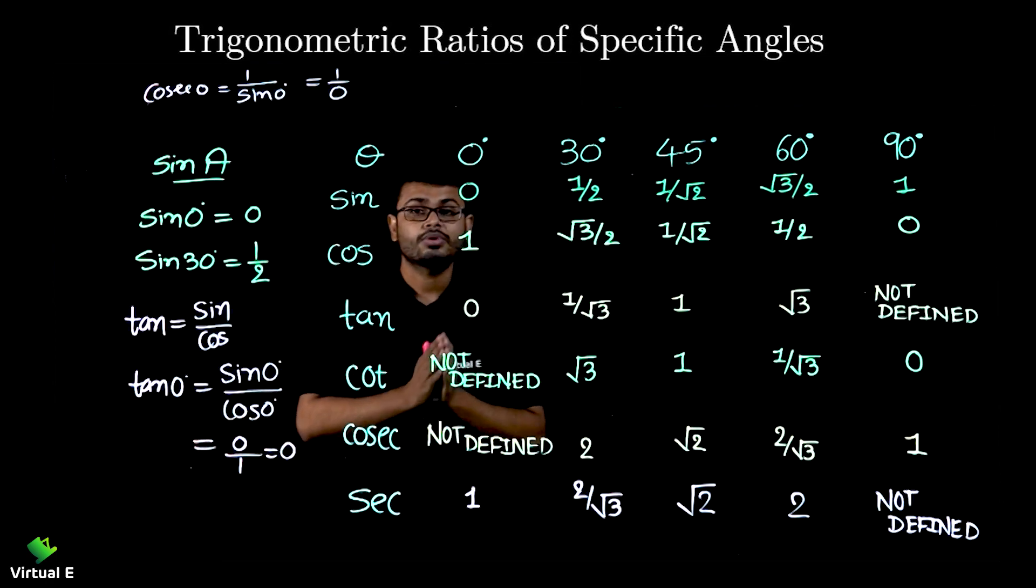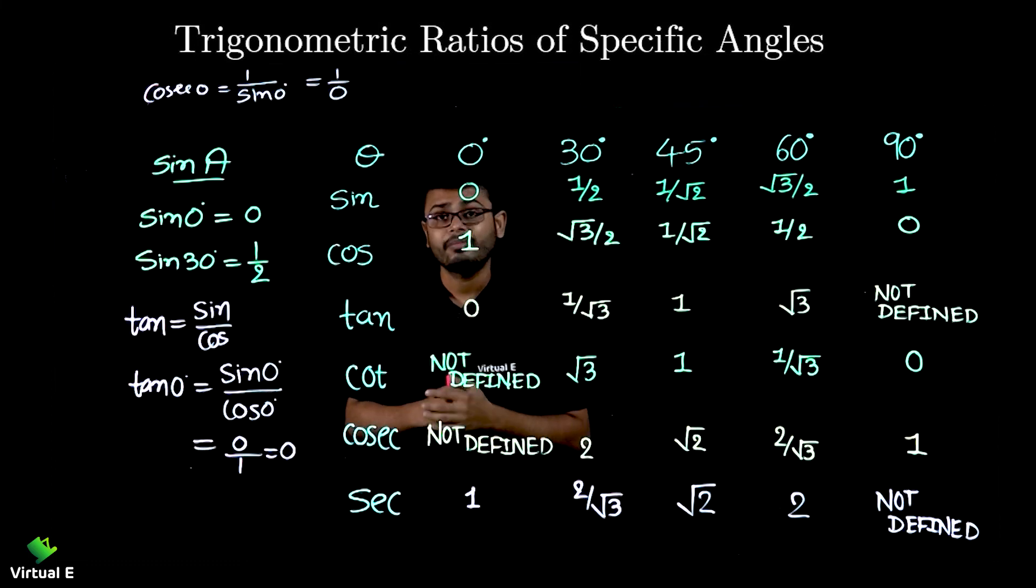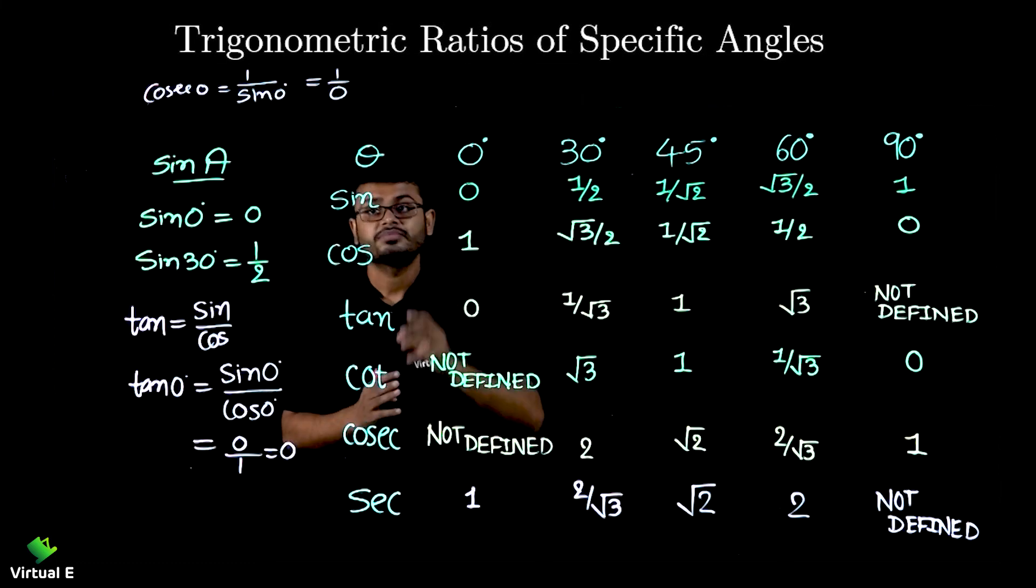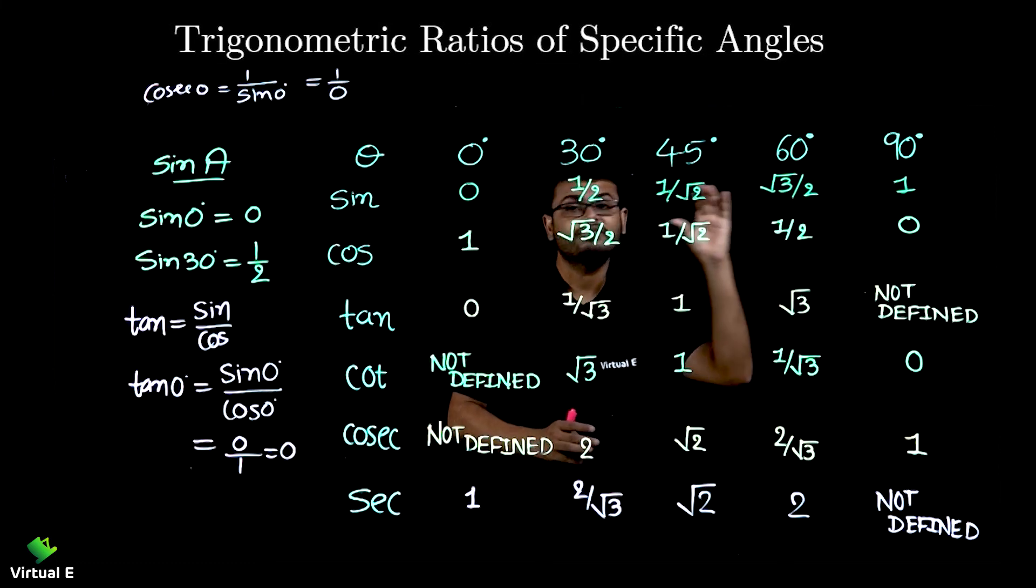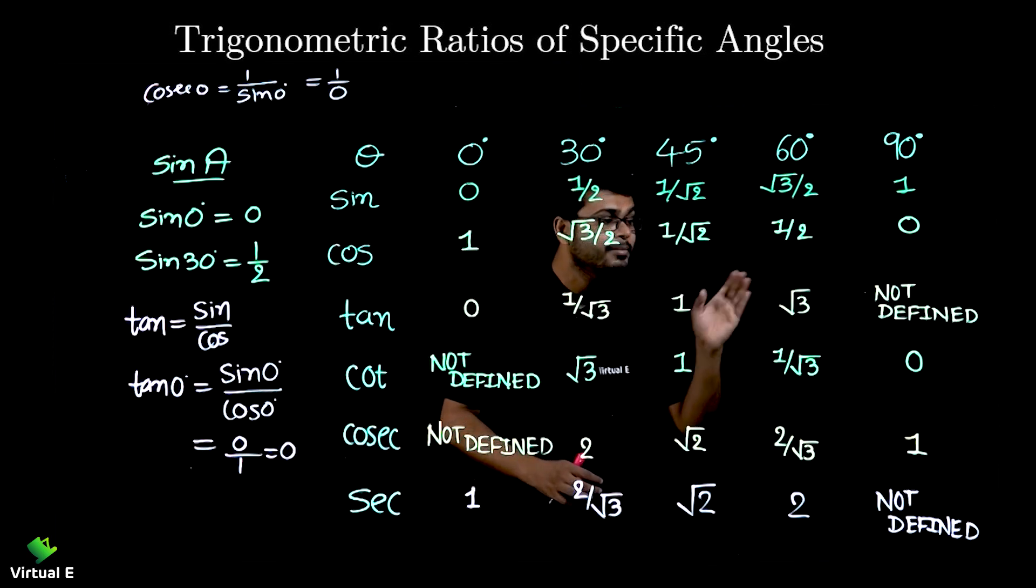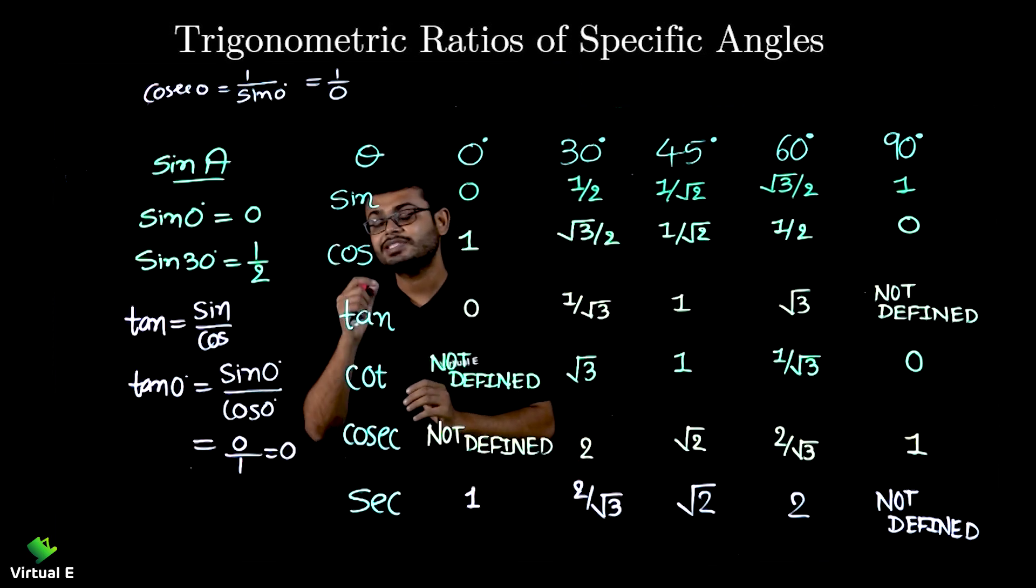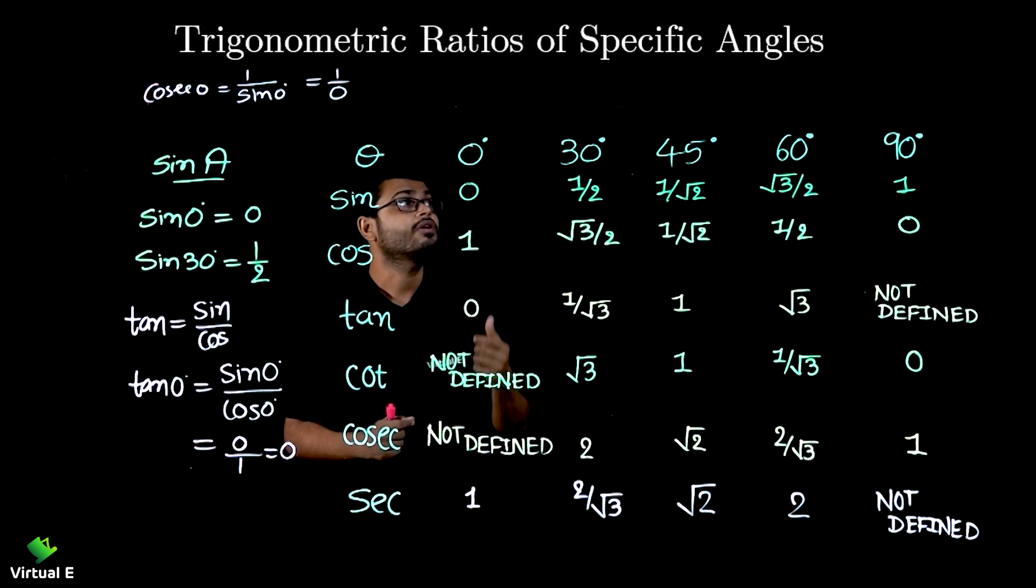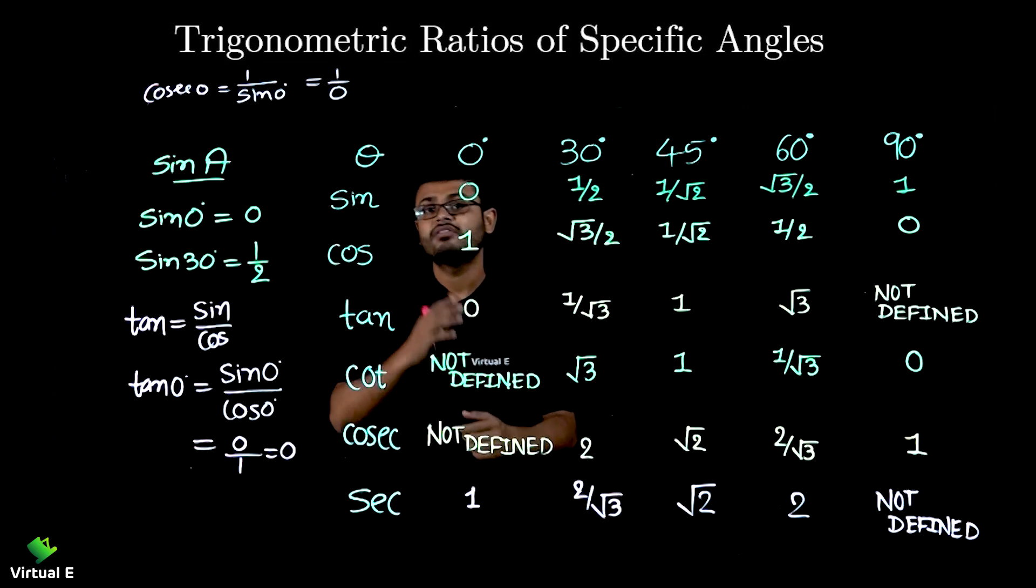Remember, you need to learn this table. If you only learn the value of sine and if you know the tricks to how to write the remaining values, then it is easy to remember this table. So this is the topic of trigonometric ratios for specific angles and we are going to discuss few problems based on this as well.